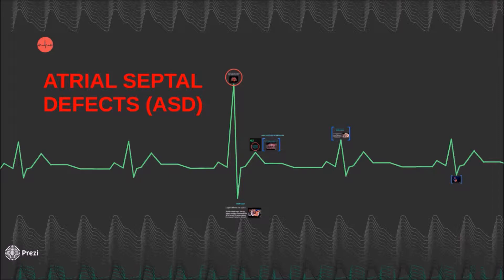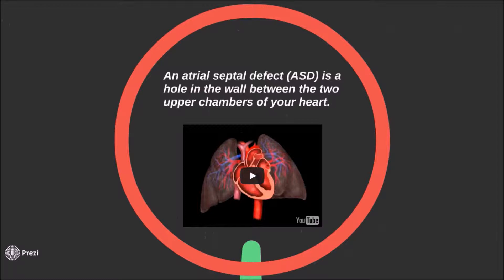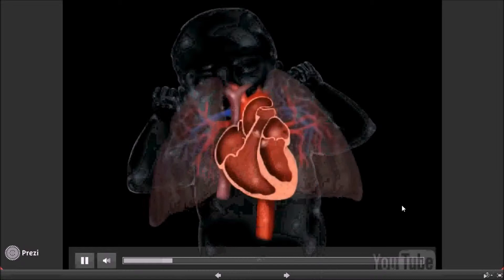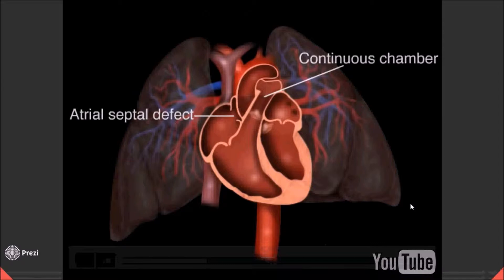Atrial Septal Defects, or ASD. The definition of an atrial septal defect, or ASD, is a hole in the wall between the two upper chambers of the heart. In this video, we can see the physiology of the ASD hole — the blood getting inside the upper chamber of the heart.